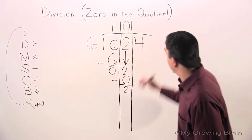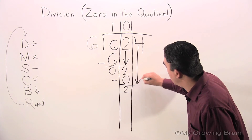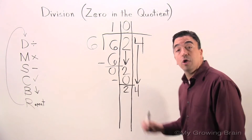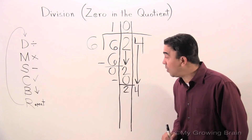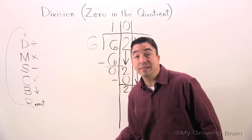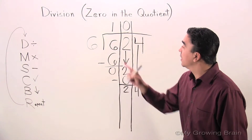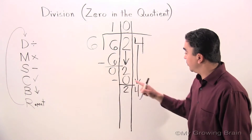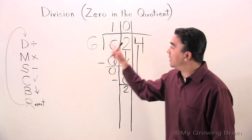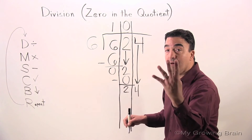Bring down — we're going to bring down the four. Twenty-four. Repeat the process. Six into twenty-four, or twenty-four divided by six — four.